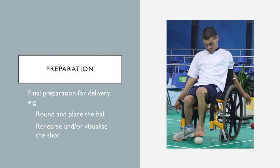The next phase is the preparation phase — the bit just before delivery. It might include things like rounding the ball, placing the ball on a ramp or in front of the athlete's foot, and then the athlete may want to rehearse or visualize the shot. This BC1 kicker has asked his assistant to round and place the ball, and now he's fine-tuning exactly where he wants it before he propels it. He'll probably look up towards the intended position before he kicks — that's all part of his preparation phase.